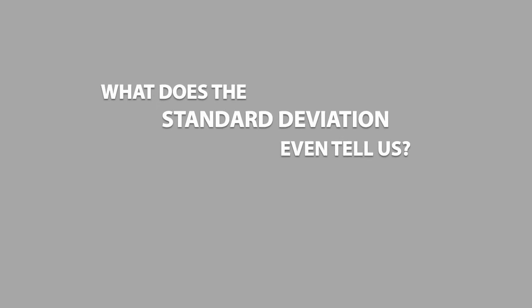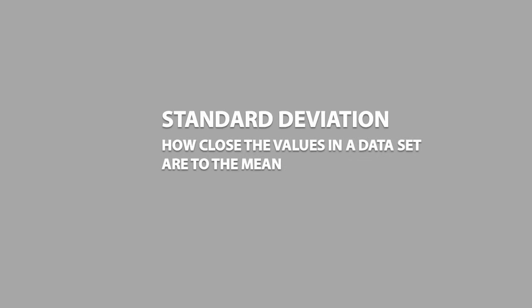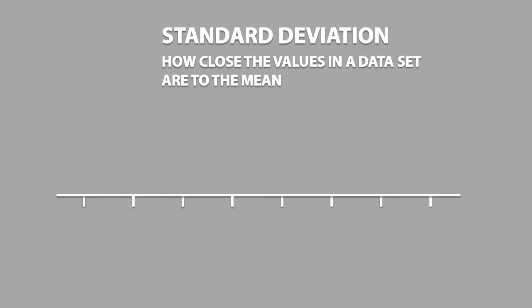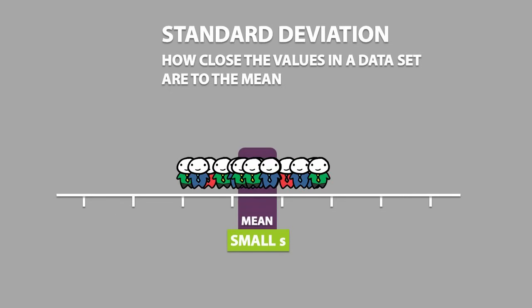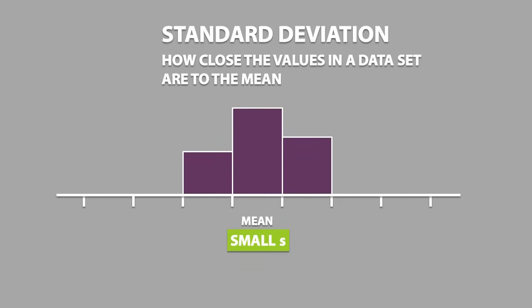Now what does the standard deviation even tell us? The standard deviation tells us how close the values in a dataset are to the mean. For example, a small standard deviation indicates a small amount of variability for a given dataset. In other words, there will be a lot of values that are closer to the mean, which makes the distribution less spread out.